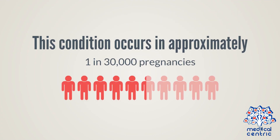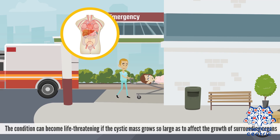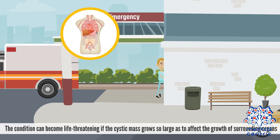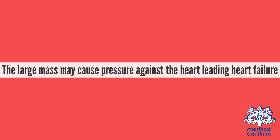This condition occurs in approximately 1 in 30,000 pregnancies. The condition can become life-threatening if the cystic mass grows so large as to affect the growth of surrounding organs. The large mass may cause pressure against the heart, leading to heart failure.